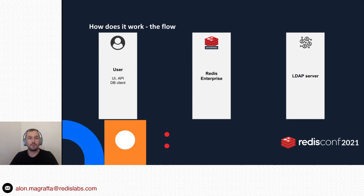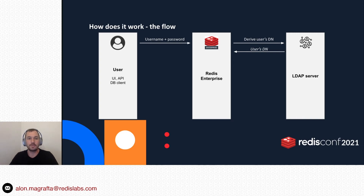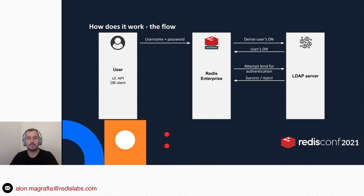How does the flow look? A user attempts to log in, providing a username and password to Redis Enterprise. These credentials can be for logging into the UI, for sending an API call, or for connecting to a database using a Redis client. Redis Enterprise then tries to derive the user's distinguished name from the LDAP server using authentication queries. We then try to perform a single bind with the user's distinguished name and the password — effectively, this is the authentication step. If the bind fails, the user gets rejected by Redis Enterprise.